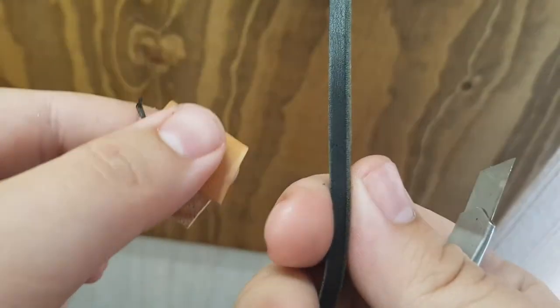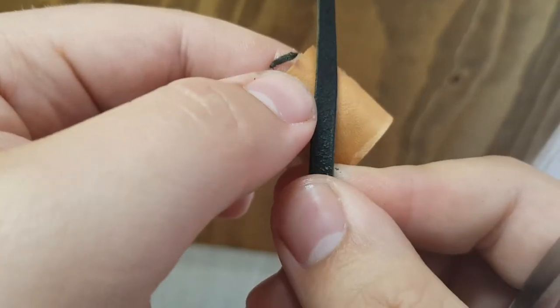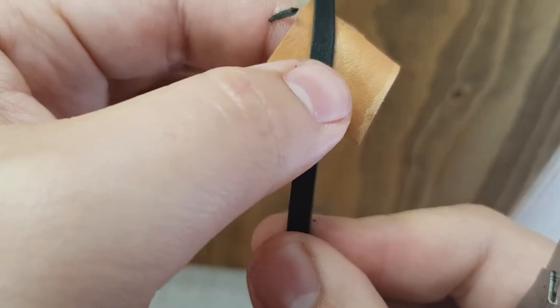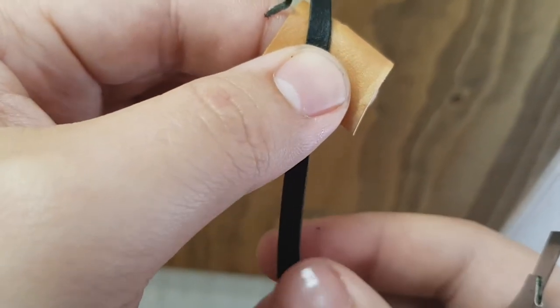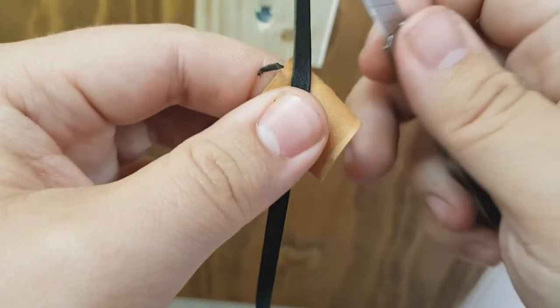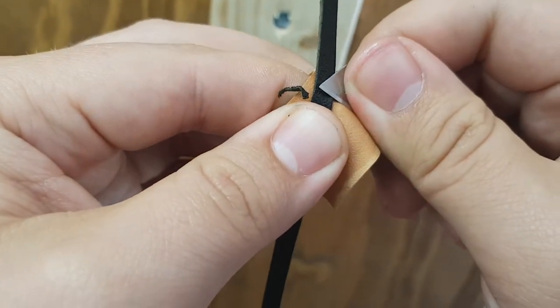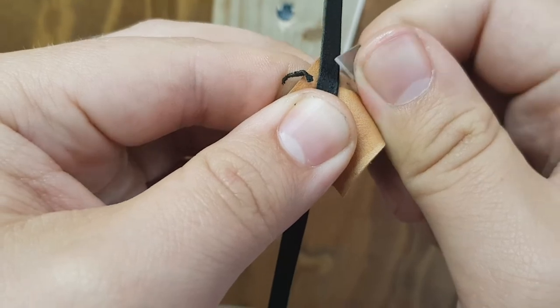And then we just flip the strand over to do the opposing corner on the other side. And it's just the same thing here. You place your blade and then just move backwards.